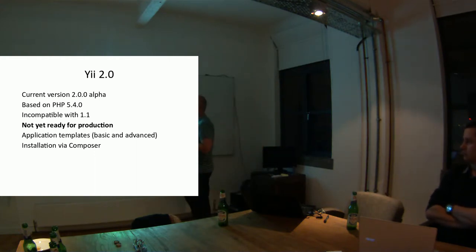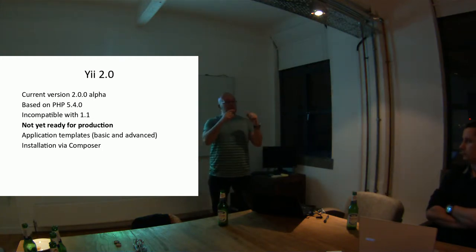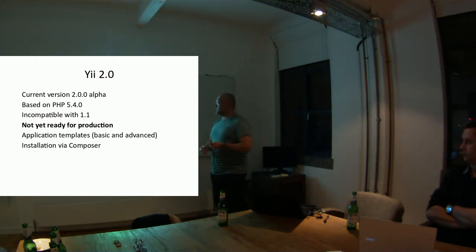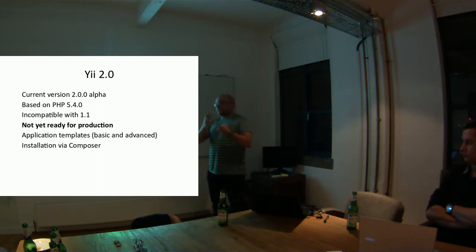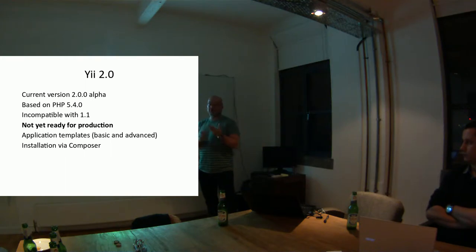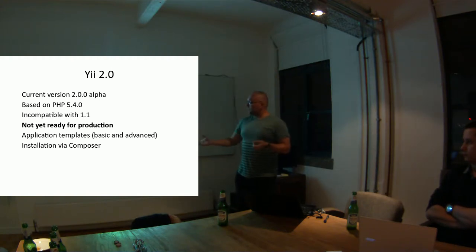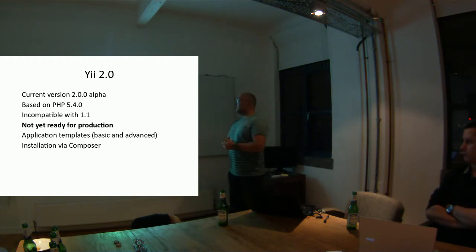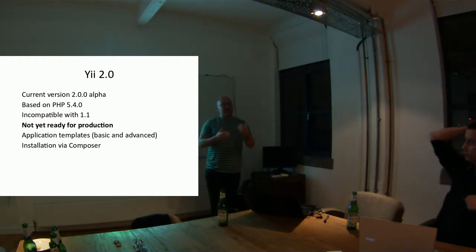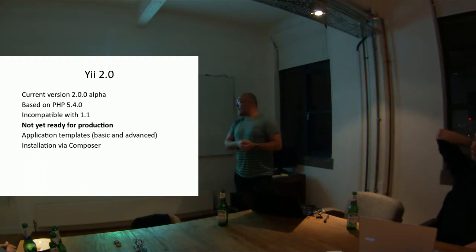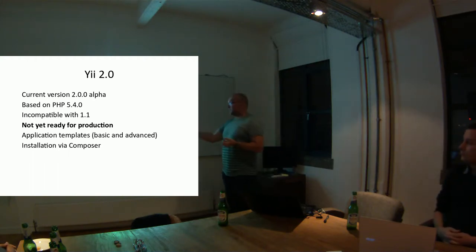PHP 5.4.0 is required, which means that you can define your arrays with square brackets, and that's only supported on 5.4.0 upwards. When it comes time for you to rewrite or port your applications to 2.0, you have to understand that it's incompatible with 1.0 — so whenever the right time comes, you have to adapt some things. There are a few cool things happening in 2.0 as well: you can install via Composer. It's very good for managing packages in PHP.